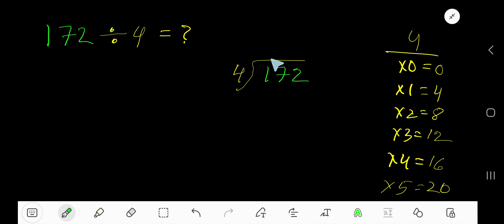4 goes into 1 how many times? 0 times, as 1 is less than 4. So 0 times 4 is 0. Subtract, then bring down the next digit. Now we have 17. 4 goes into 17 how many times?